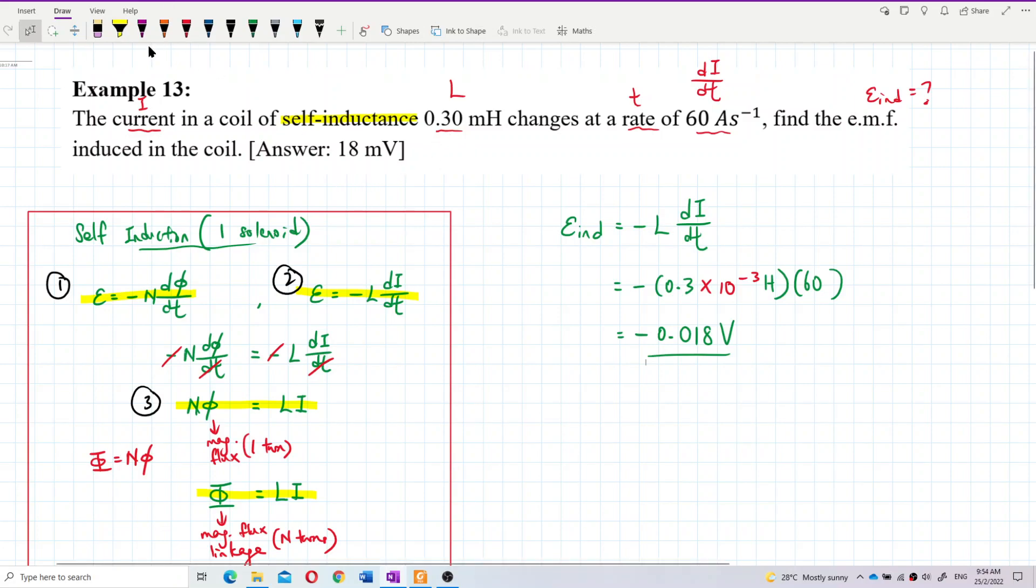The answer is 18 millivolt, negative actually. It's better if you put a negative sign because the equation has a negative. Don't throw it away - sometimes they deduct marks if you simply throw away the negative sign.